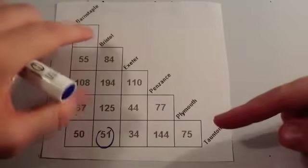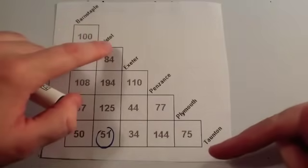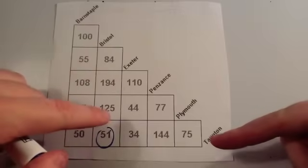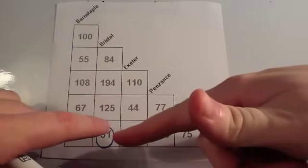So the key is to follow in if they want the distance from Bristol to Taunton. You find the Bristol column and the Taunton row and you follow them in to find where they meet.